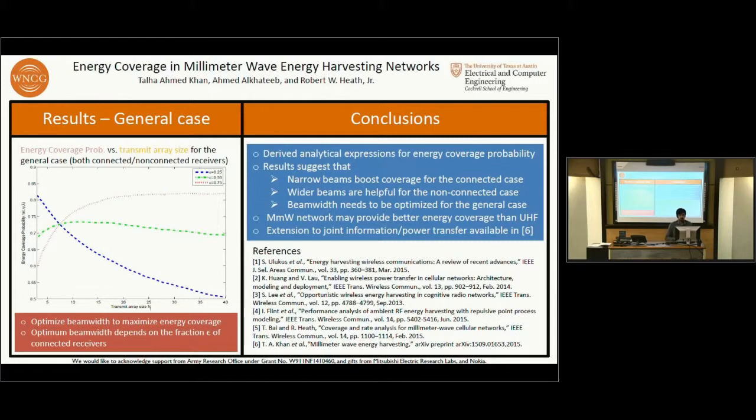To conclude this talk, we derived analytical expressions for energy coverage probability using tools from stochastic geometry. Our results suggest that narrow beams boost coverage for the connected case, while wider beams are more helpful for the non-connected case. Beamwidth needs to be optimized for the general scenario where the network has both connected and non-connected receivers. We also showed that millimeter wave networks may provide better energy coverage than UHF in some scenarios. The extension to the case of simultaneous information and power transfer is also available online at the reference noted.